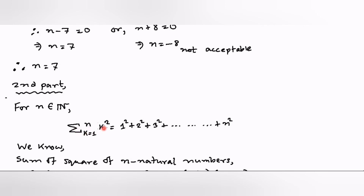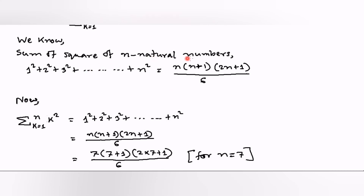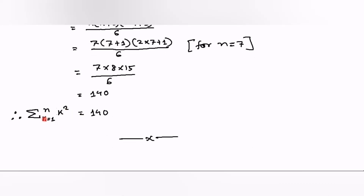In the second part, they ask to determine the summation from k=1 to n of k². This gives 1²+2²+3²+...+n². The formula is n(n+1)(2n+1)/6, where n is the number of terms. We apply the formula with n=7 (already determined) and after solving we get the result: the summation from k=1 to n of k² equals 140.